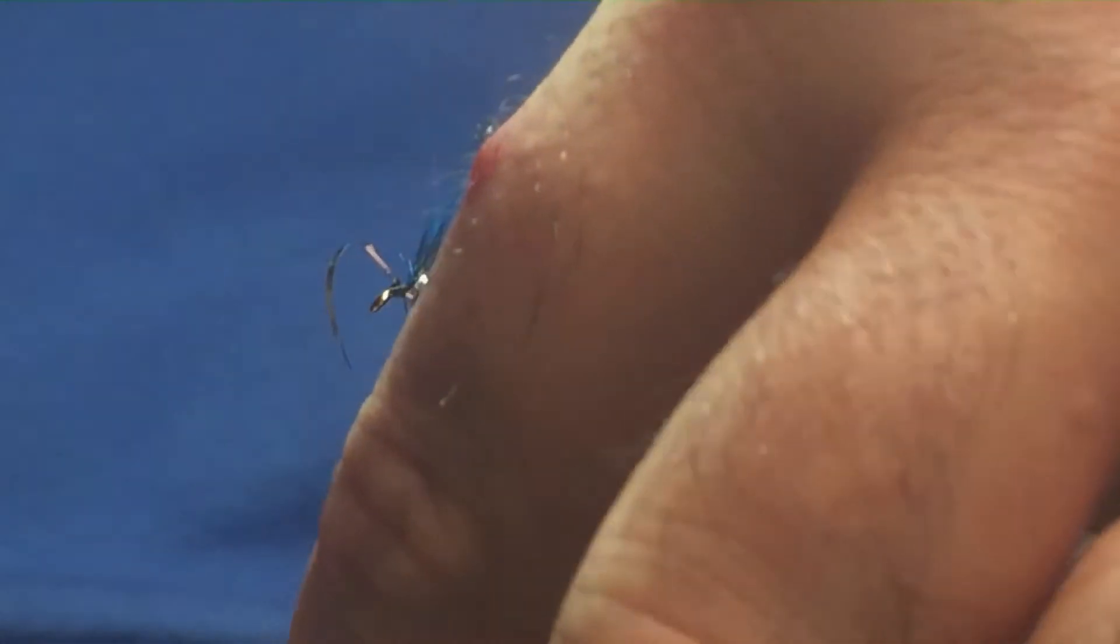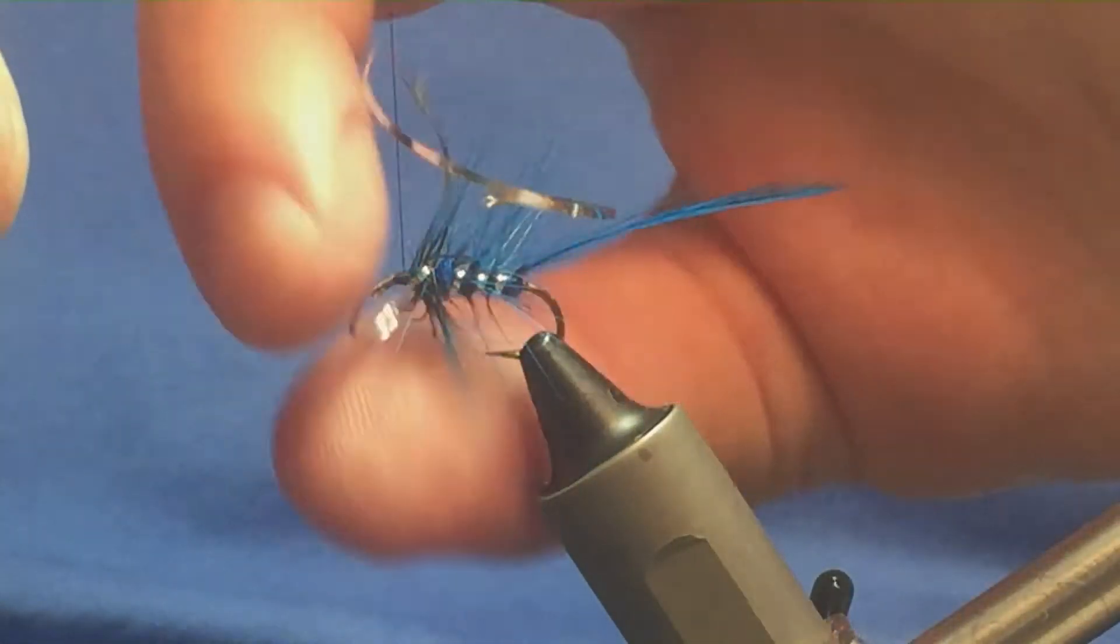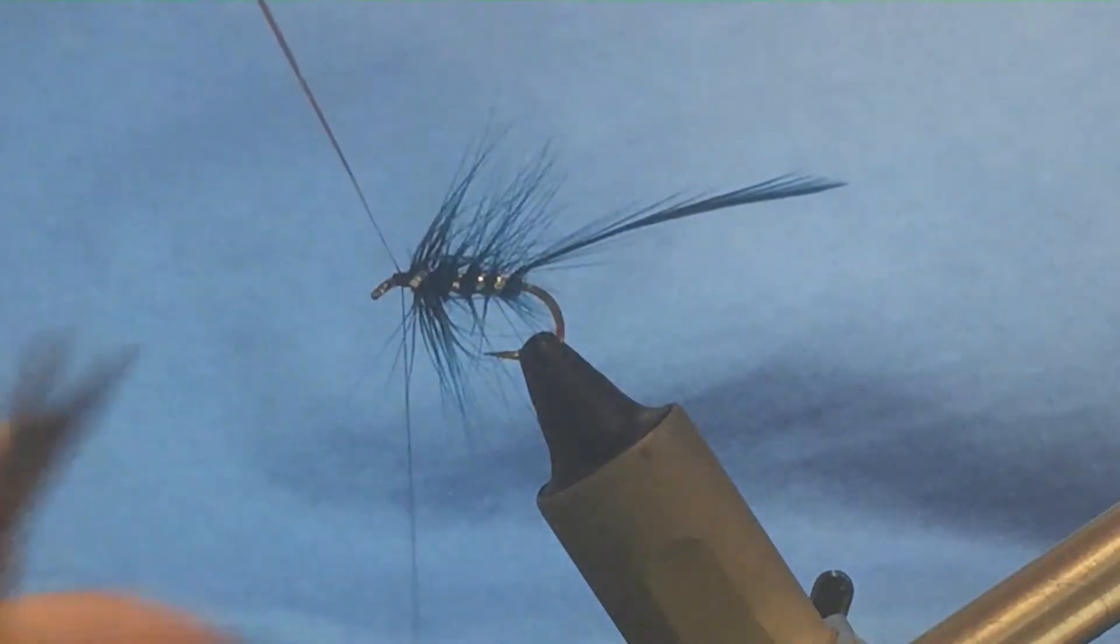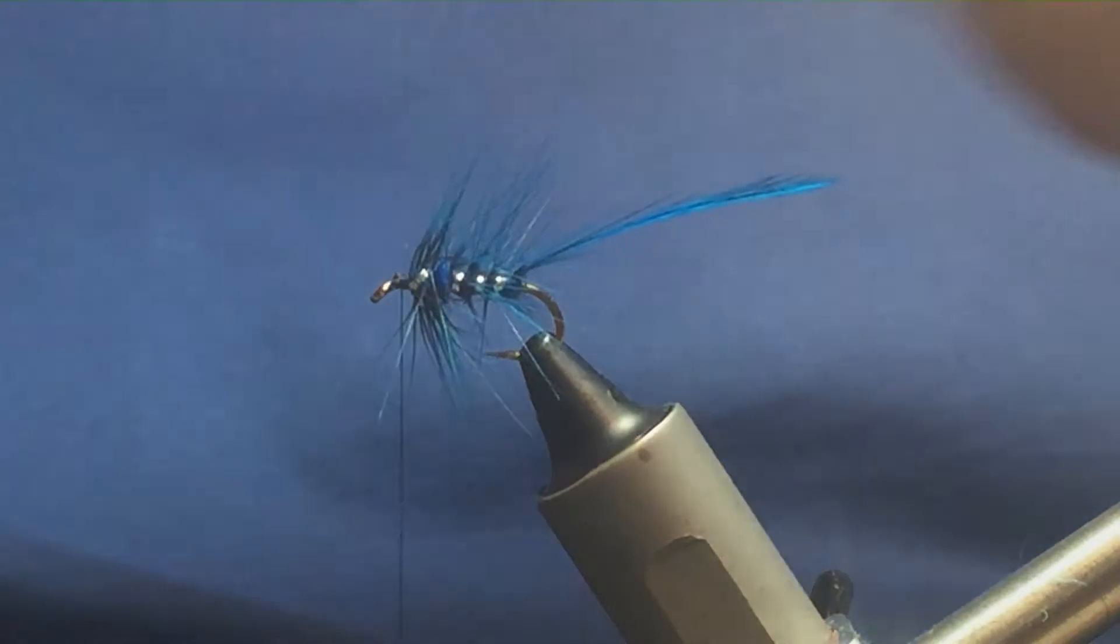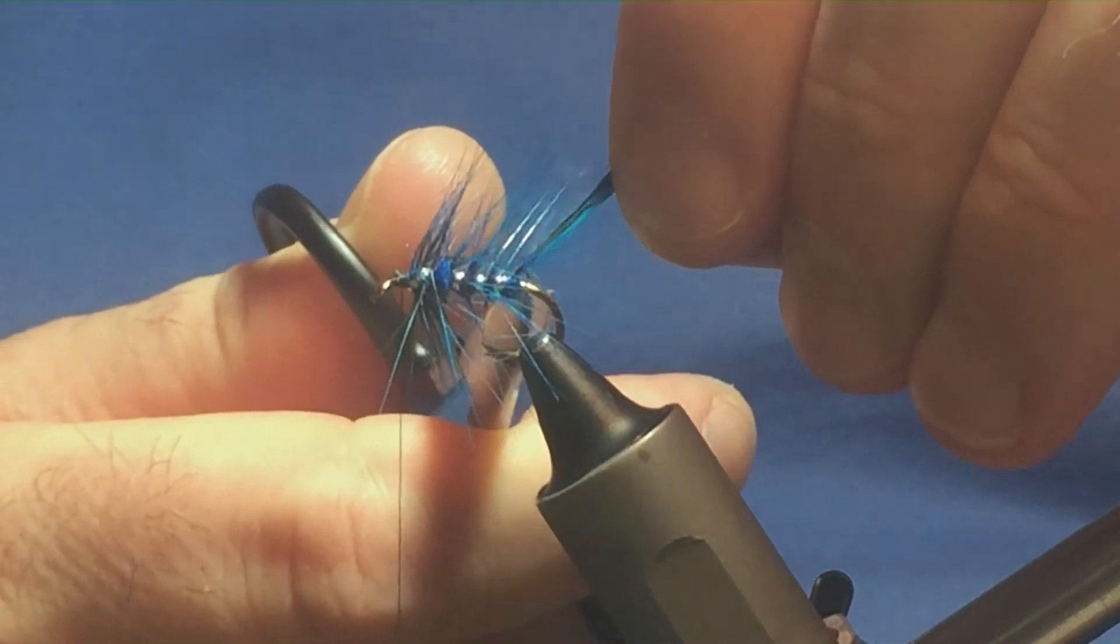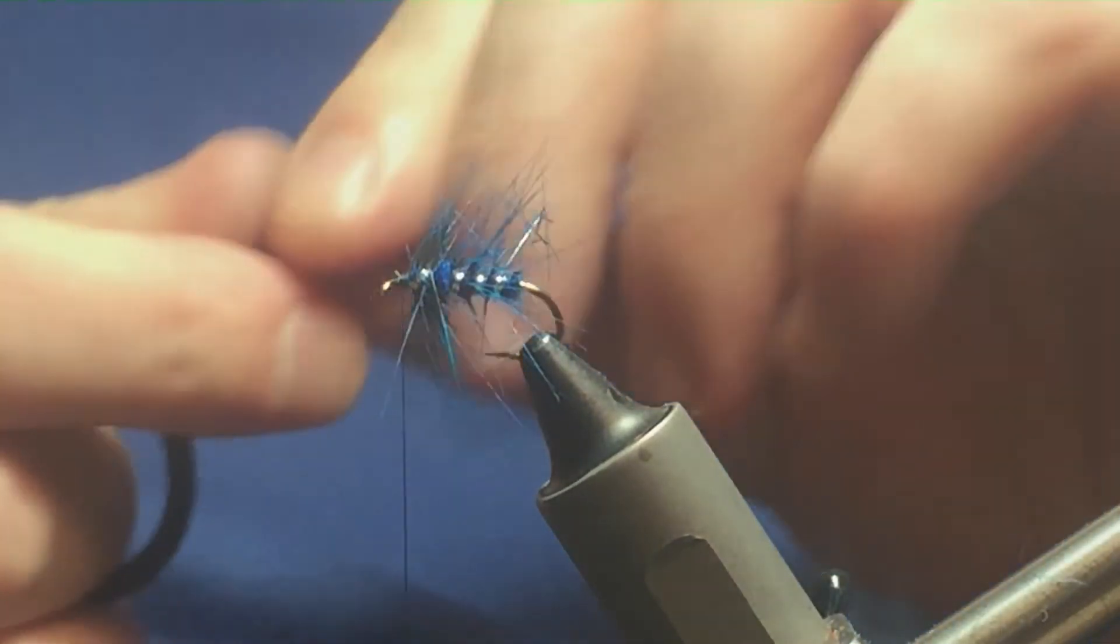your tinsel in front and then just get on a nice few tight turns of thread. Then you come in and trim away the excess, and then come in and just trim away the stem of the hackle, the tip of the hackle at the back.